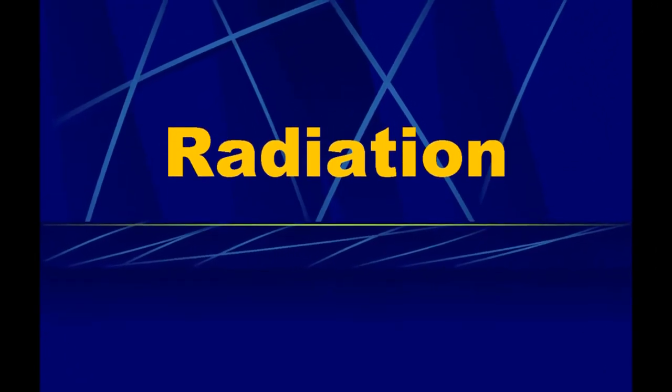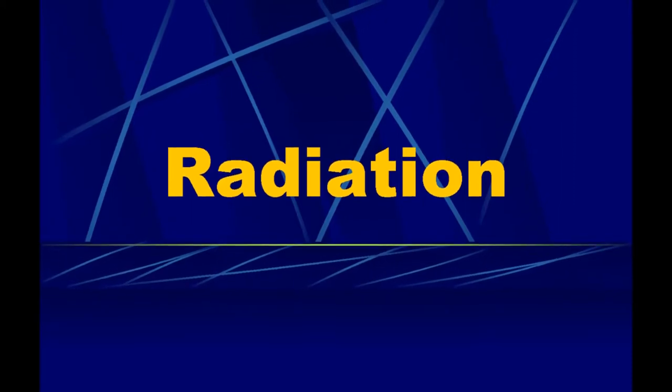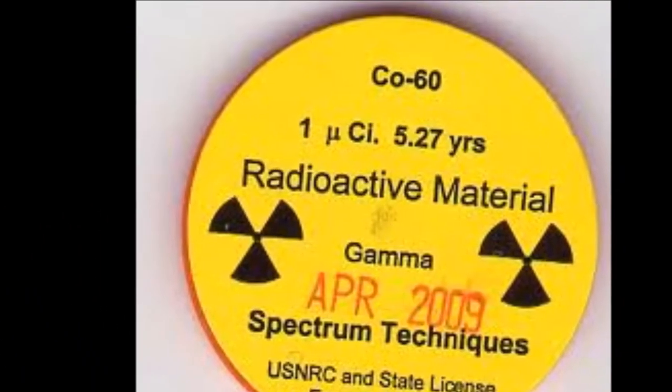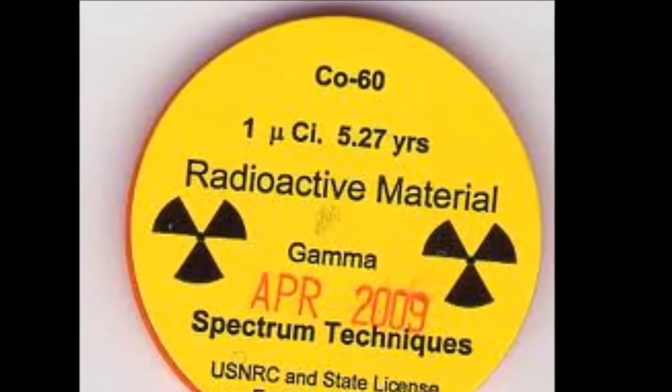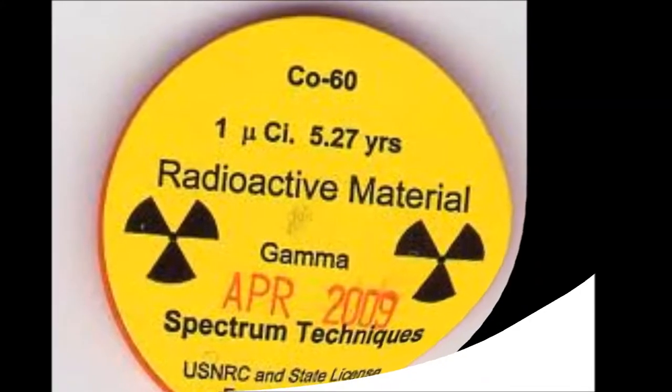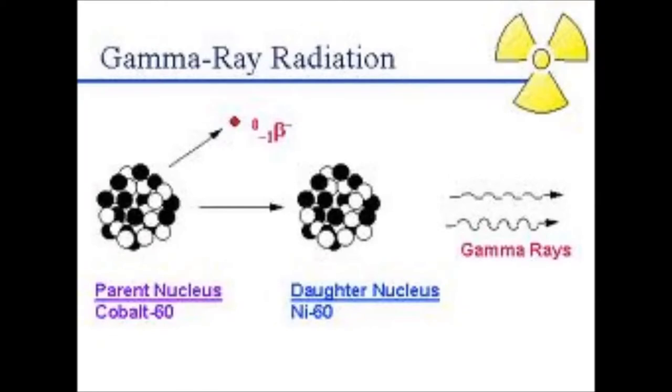For the reason that radioactive decay leads to more stable products, it always releases energy. Some of this is in the form of kinetic energy, but is mostly given off as a form of radiant energy called gamma rays. Gamma rays can be viewed as streams of high-energy photons. During the beta decay of cobalt-60, gamma rays are produced.